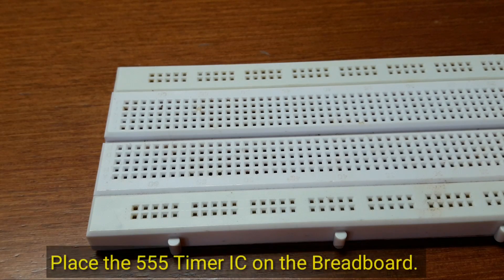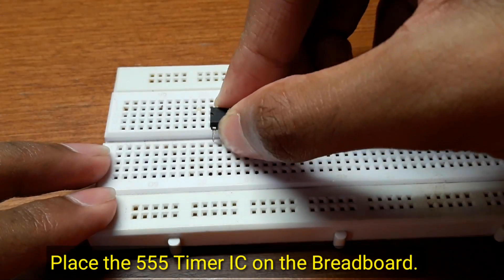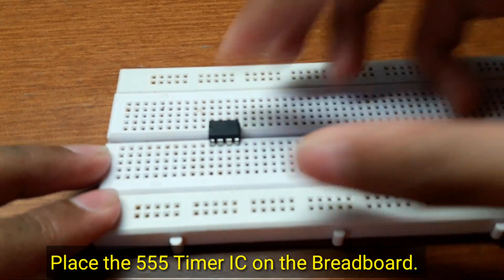So first place the 555 timer IC on the breadboard with its notch facing the left.